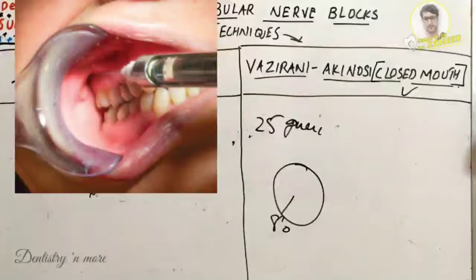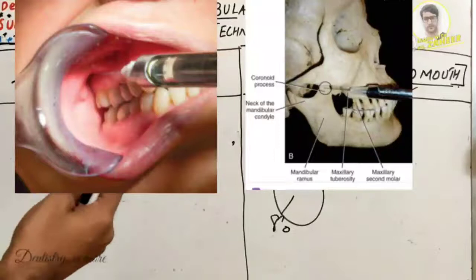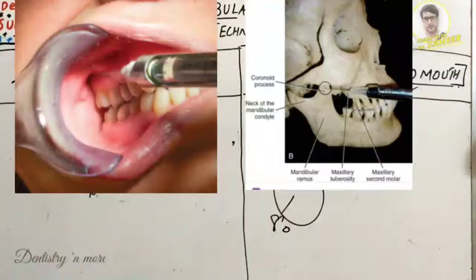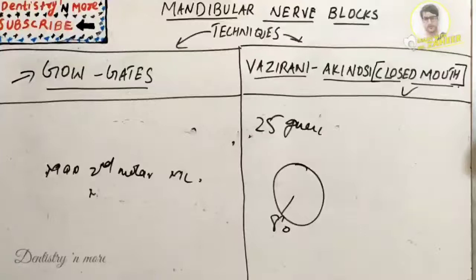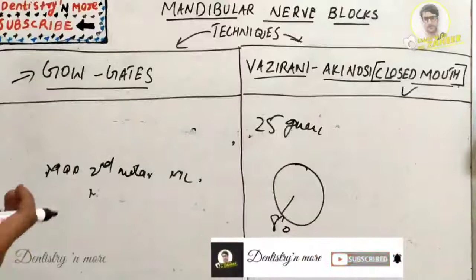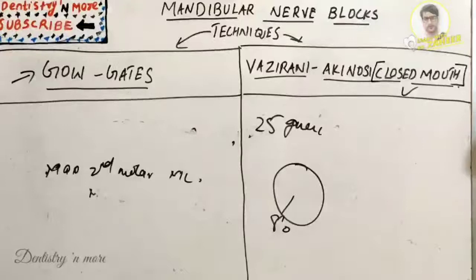The needle is at the level of the mucogingival junction of the maxillary third molar, with the bevel directed away from the bone. The needle is advanced 25 mm into the tissue; the tip should lie in the midportion of the pterygomandibular space with no bone resistance. Aspirate in two planes; if negative, deposit 1.5 to 1.8 ml over one minute. Anesthesia of the lip and tongue is noted within one minute, and the dental procedure can begin after five minutes.